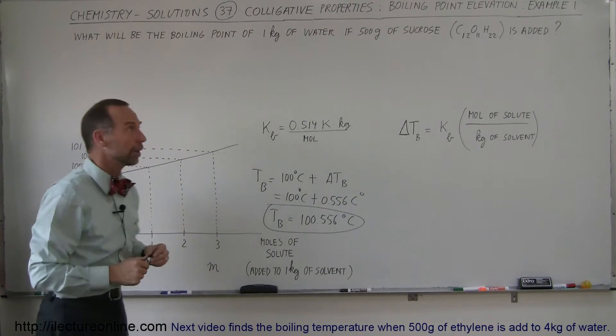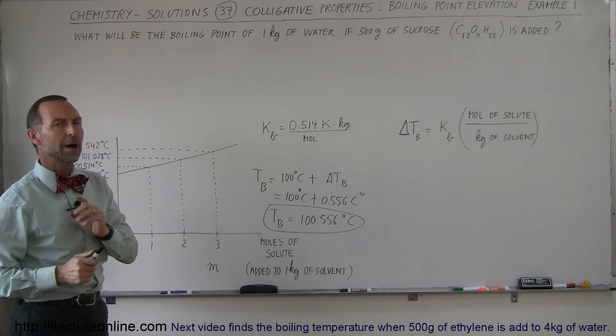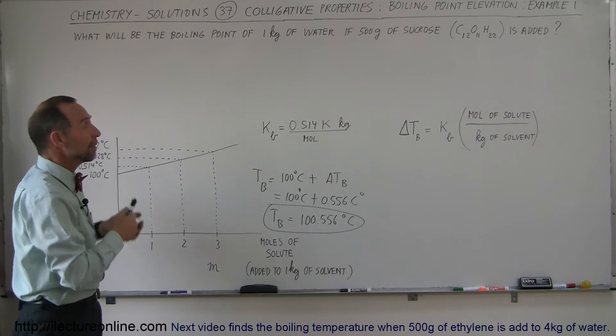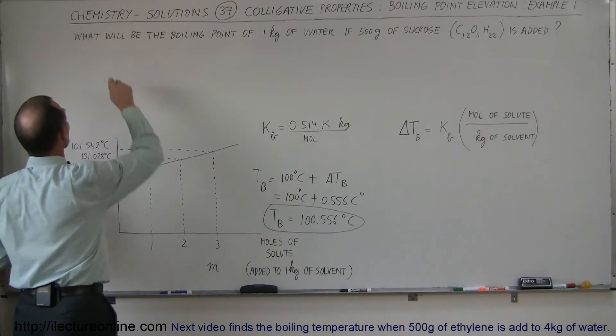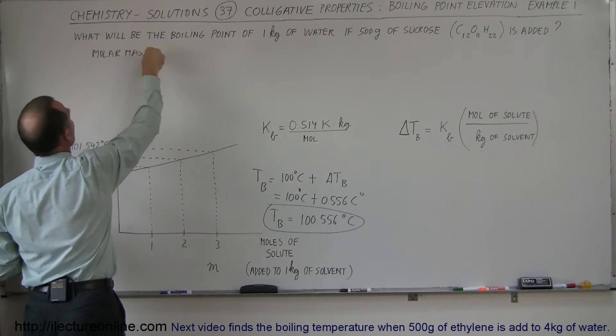In this case, we have one kilogram of the solvent water, but now we also have to figure out how many moles of sucrose we have, how many moles is 500 grams of sucrose. So first we need to find the molar mass of sucrose.